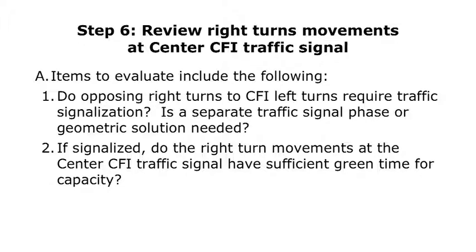For Step 6, I'm going to review the right turn movements at the center CFI traffic signal. Items to evaluate include: Do the opposing right turns to the CFI left turns require traffic signalization? Am I going to need to signalize them? Am I going to separate the traffic signal phasing, or is a geometric solution needed? Several CFIs being designed are looking at it from a geometric design approach, while others are signalizing the right turns at the center CFI. If you are going to signalize the right turn movements at the center CFI, do those right turn movements have sufficient green time for capacity? This is something that could be overlooked and needs to be evaluated.